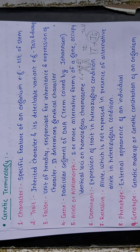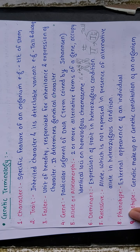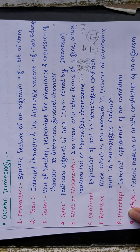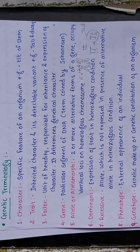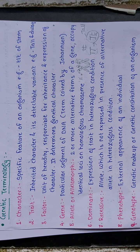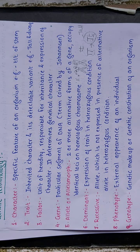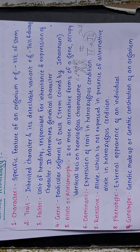'Phenotype' is the external appearance of an organism — how an individual looks, whether tall or dwarf, white or brown — that is the phenotype. 'Genotype' is the genetic make-up or genetic constitution of an organism.